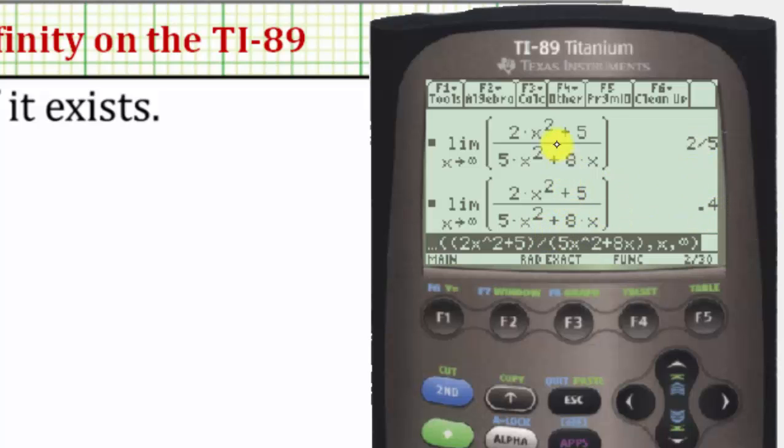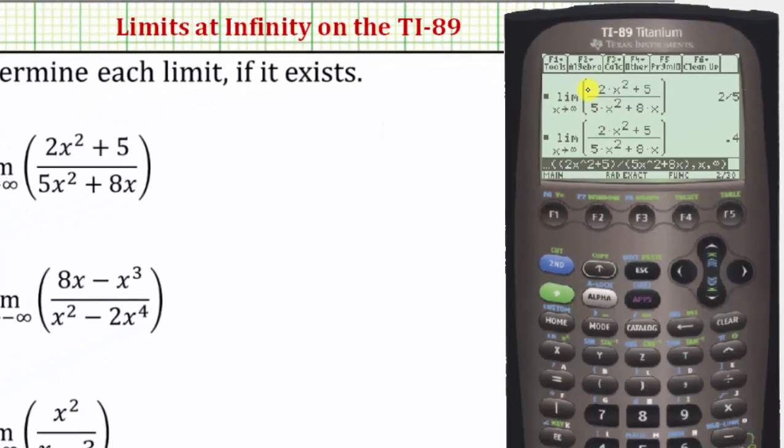We should recognize this because notice how the degree of the numerator and denominator are the same, and therefore as x approaches infinity, this limit equals the ratio of the leading coefficients, which is 2 fifths.